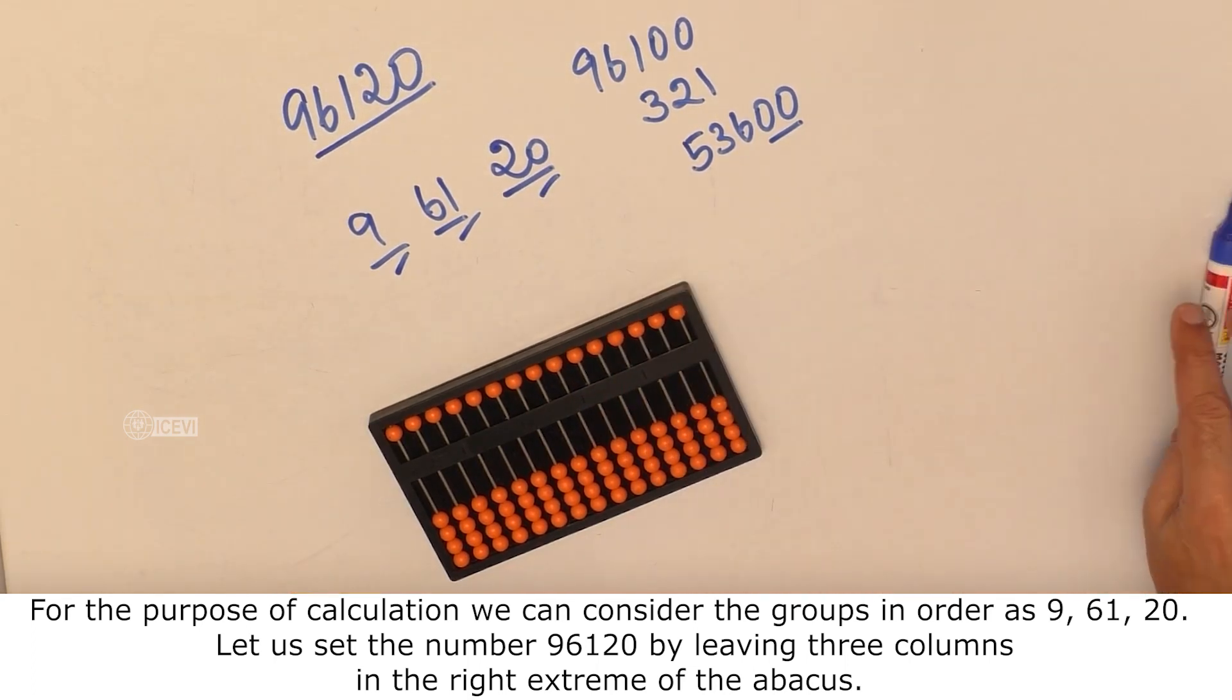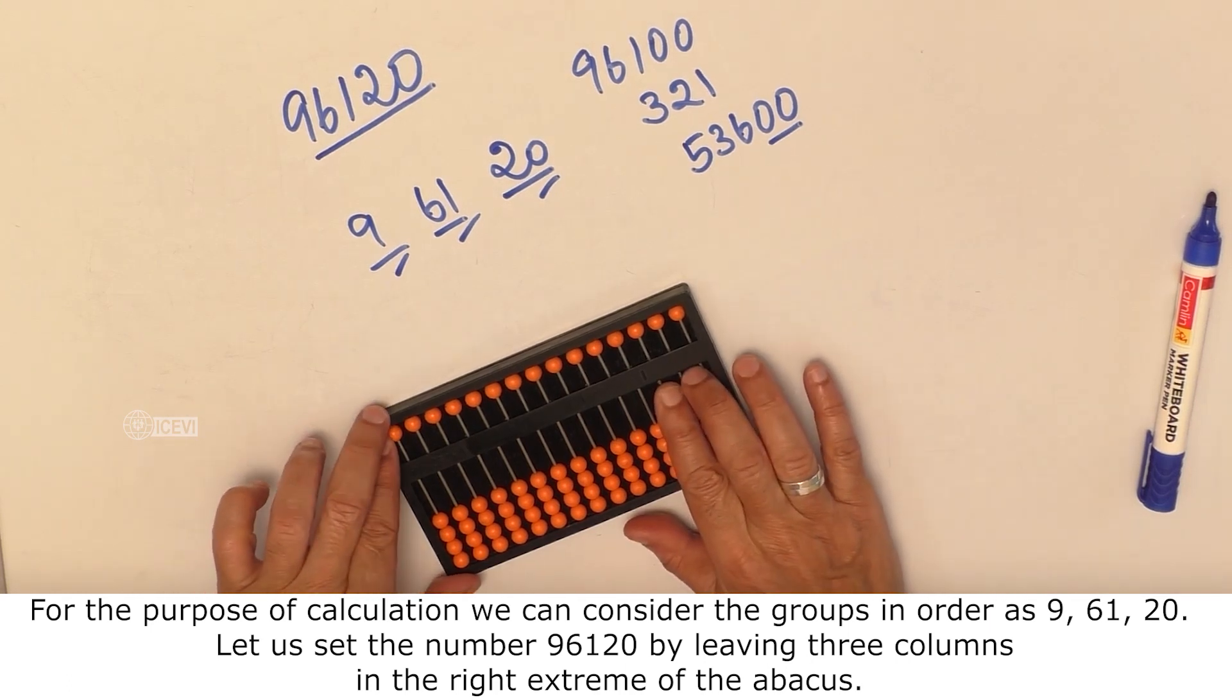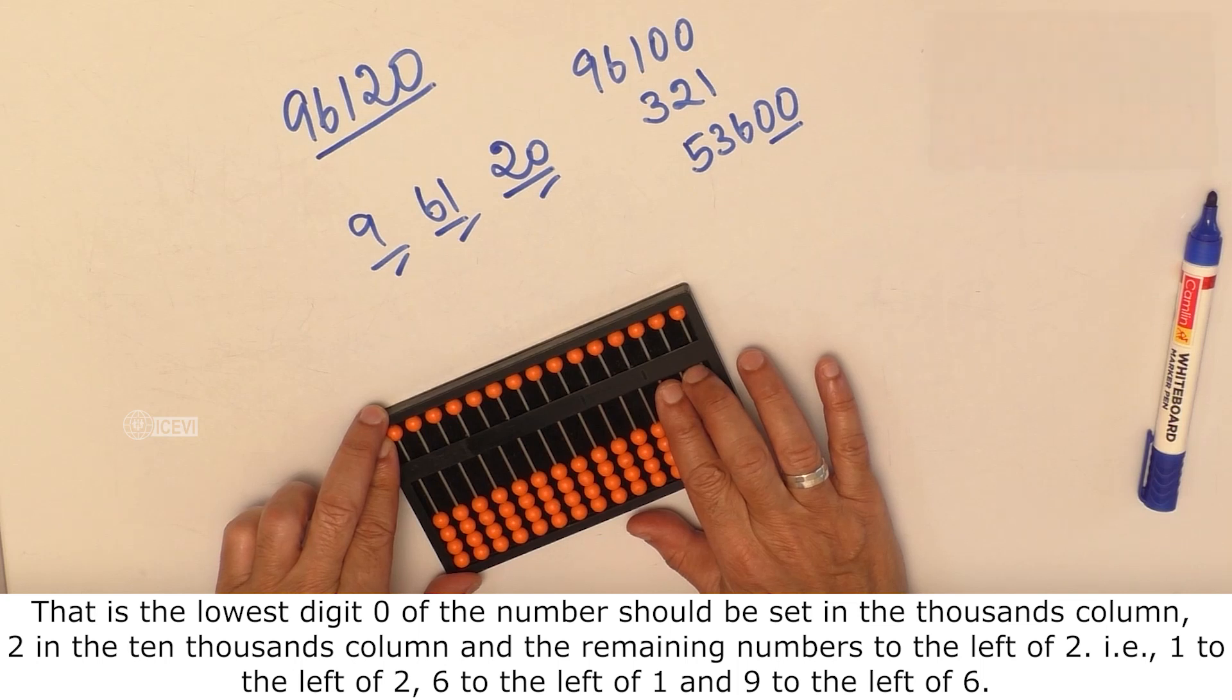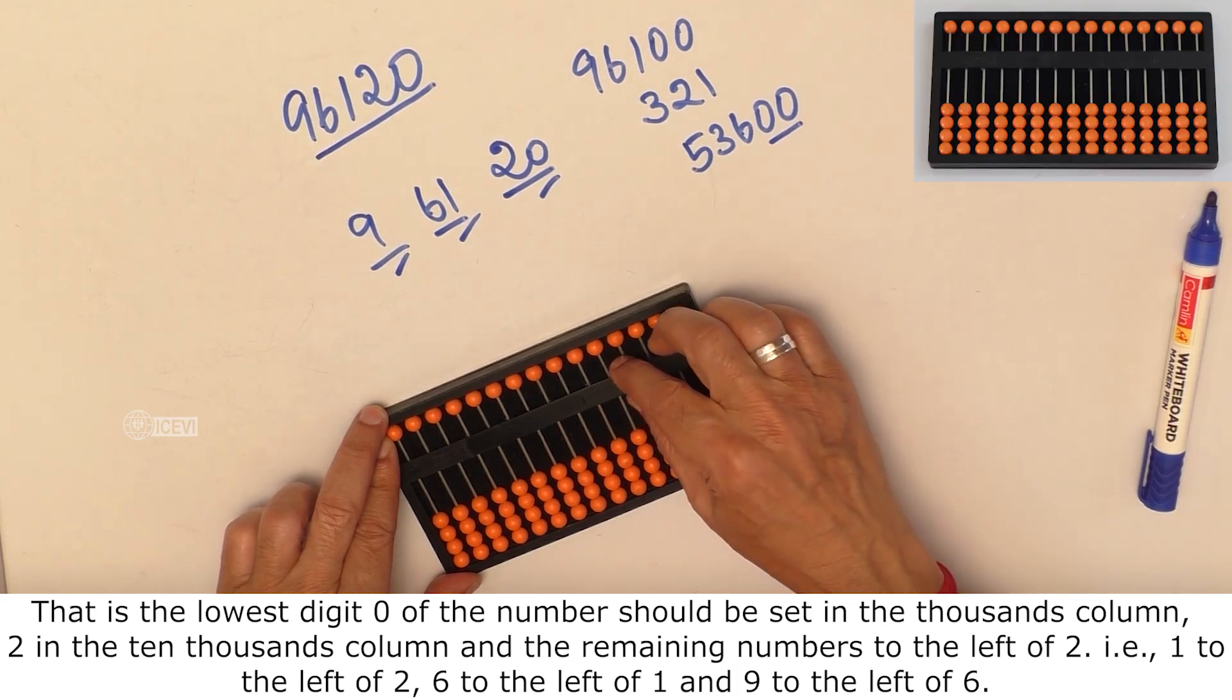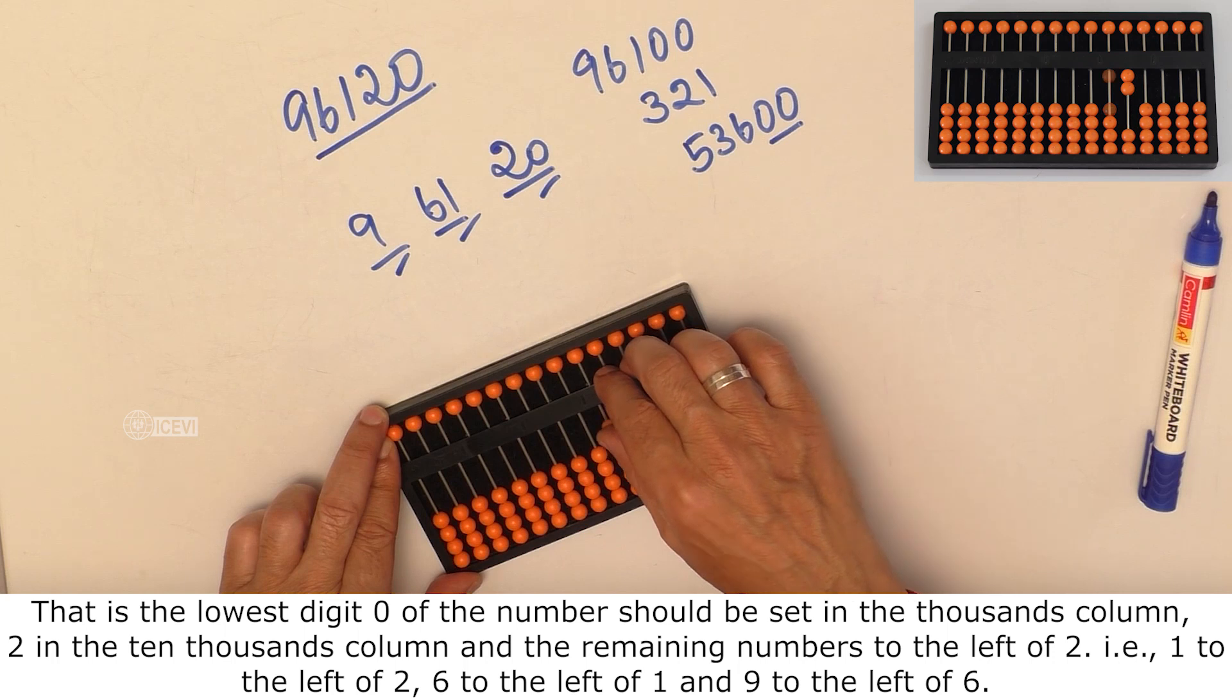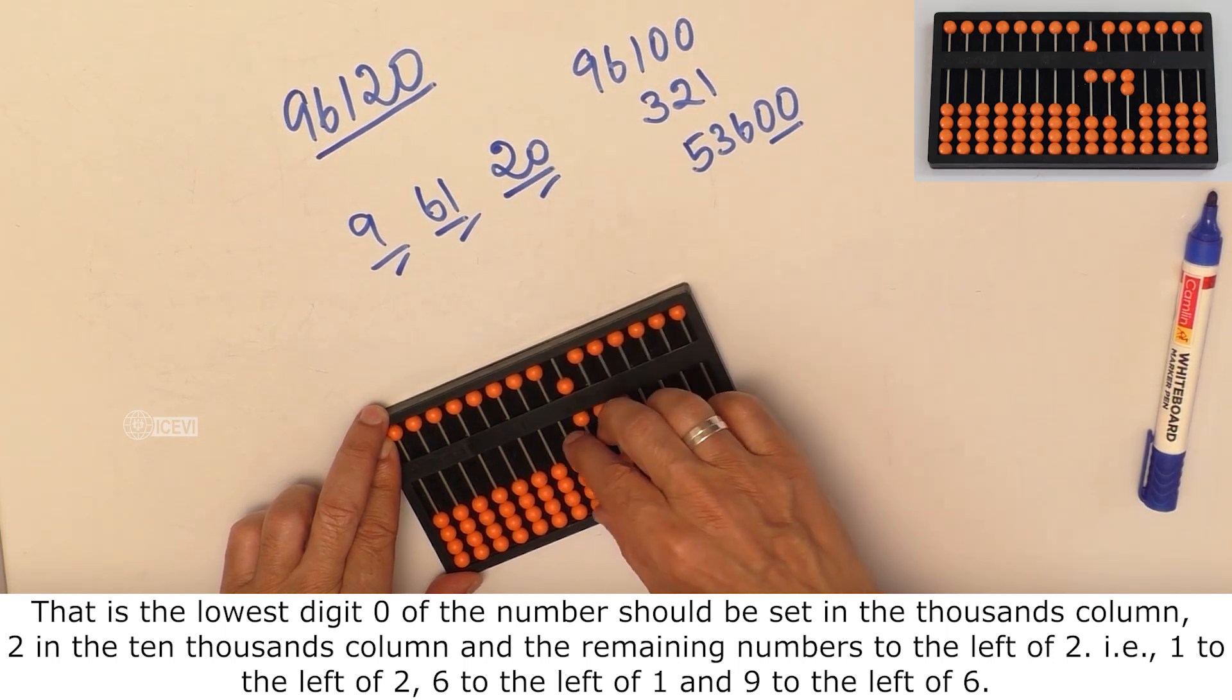Let us set the number 96120 by leaving three columns in the right extreme of the abacus. That is, the lowest digit 0 of the number should be set in the thousands column, 2 in the ten thousands column, and the remaining numbers to the left of 2. That is, 1 to the left of 2, 6 to the left of 1.